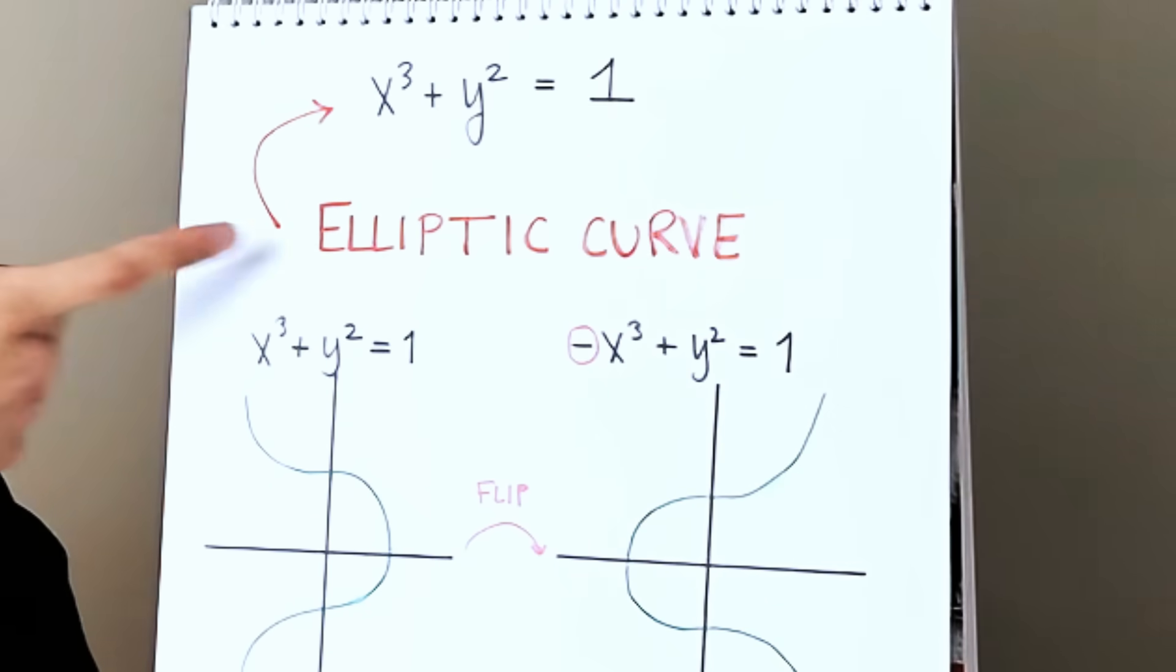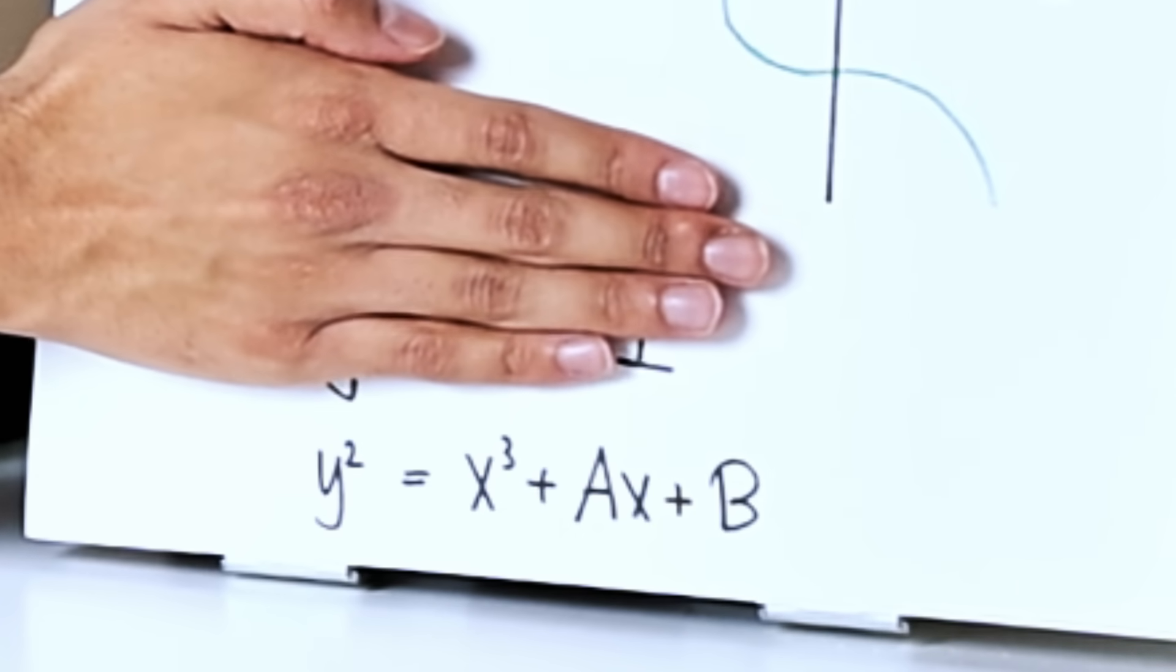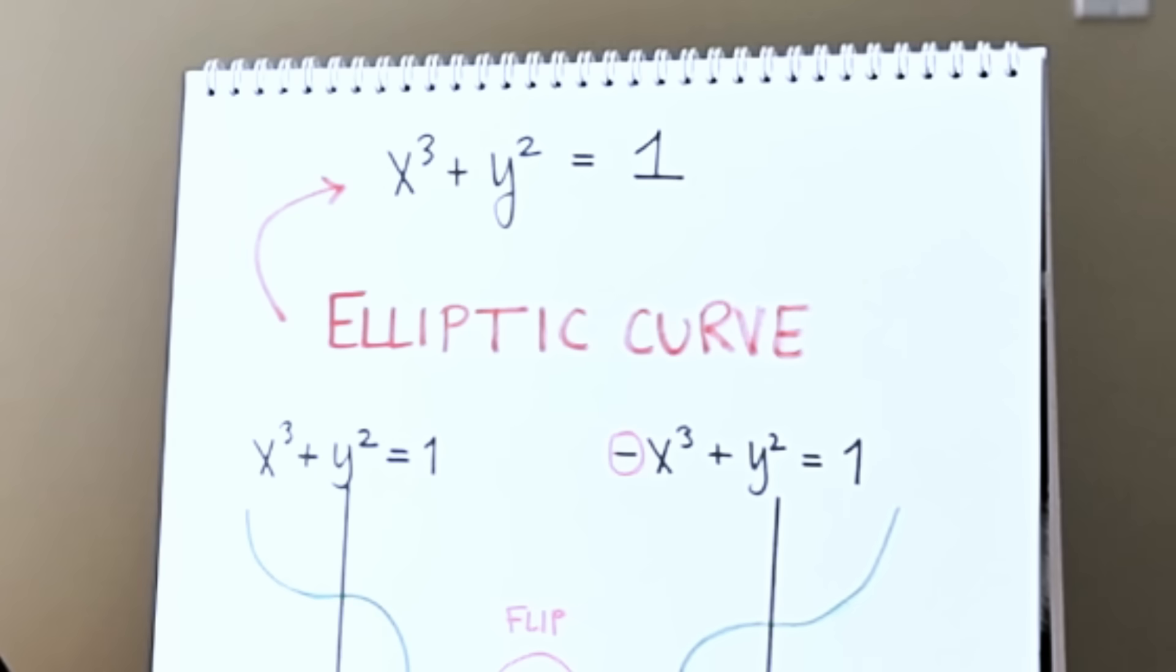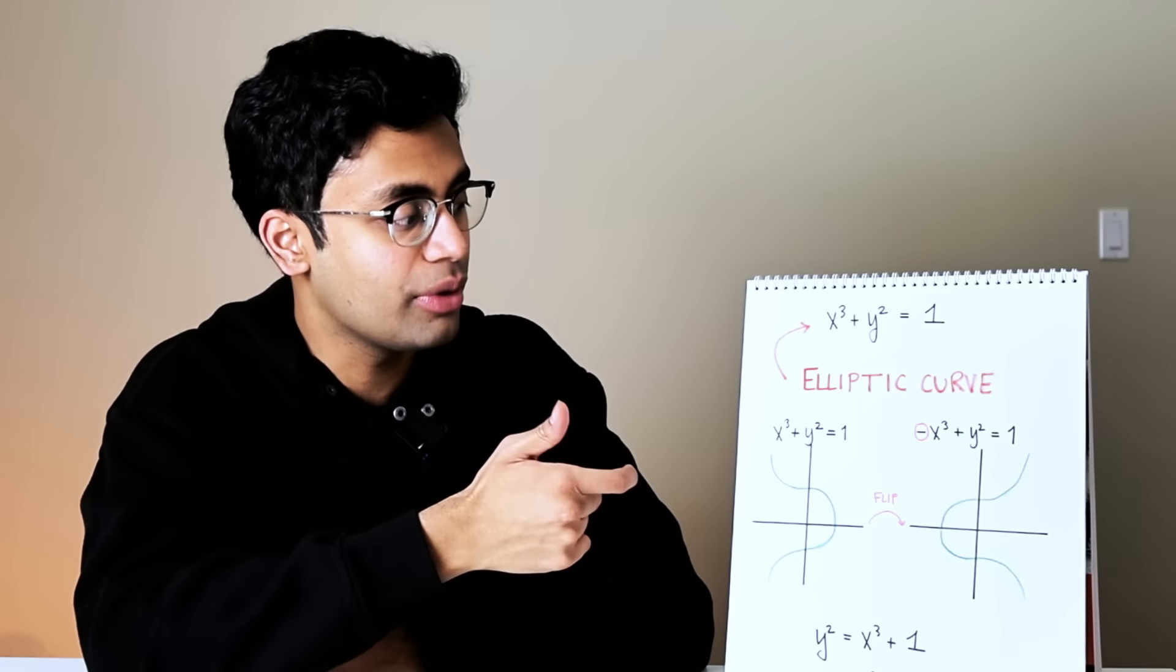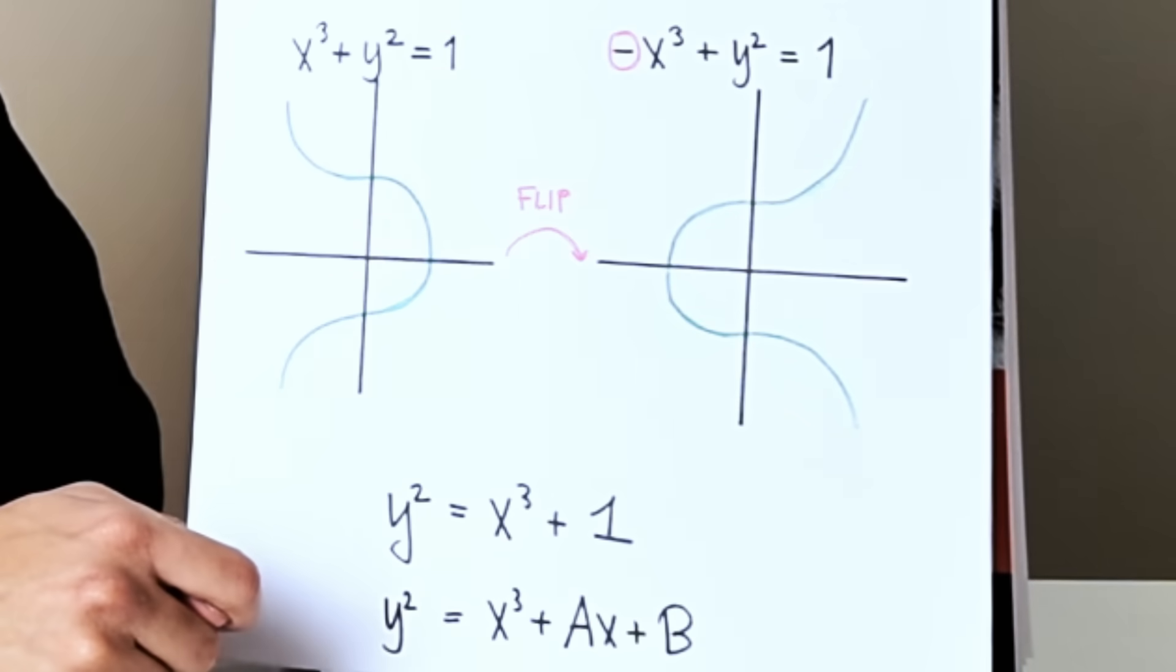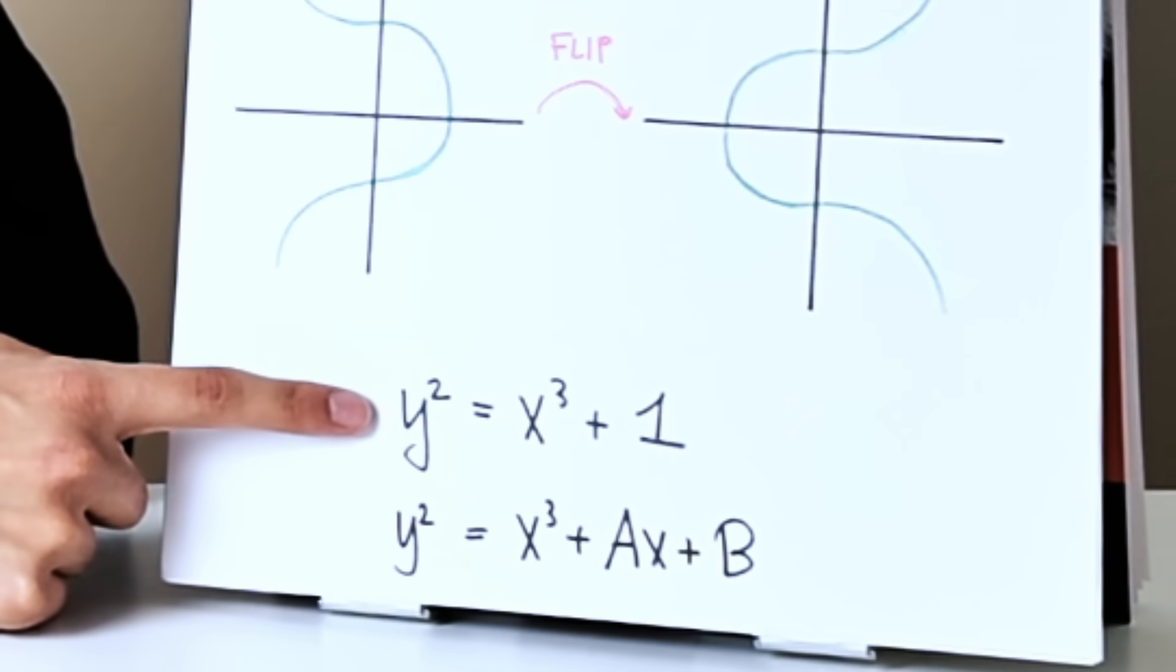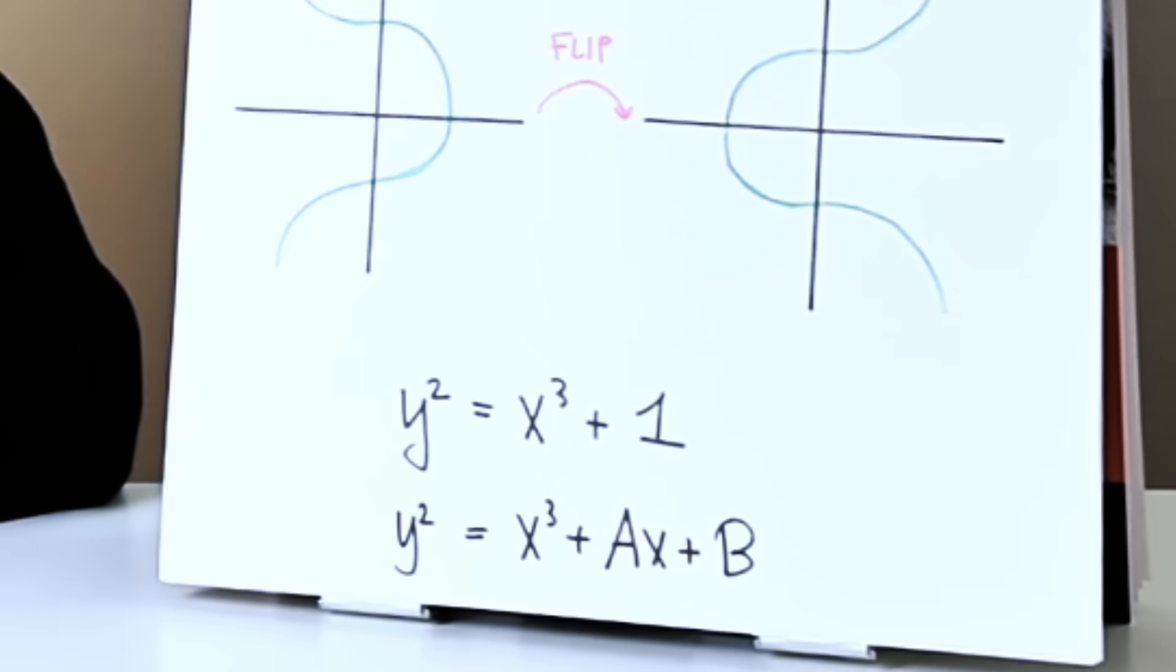This equation is an example of something called an elliptic curve. What is an elliptic curve? It's an equation of the following form: y squared equals x cubed plus ax plus b, where a and b are integers and this has to be a smooth curve. We can get it to that form by making a small adjustment - we're going to flip this graph across the y-axis by adding a minus sign in front of the x cubed. Then if we rearrange, we get y squared equals x cubed plus one, which is of the desired form where capital A is zero and capital B is one.